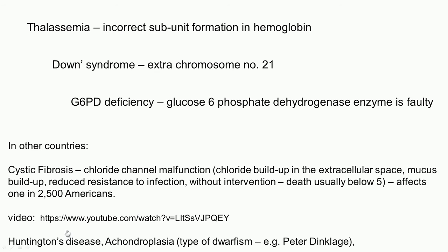Huntington's disease, which manifests above age 45, is also a genetic disorder. Achondroplasia is a kind of dwarfism — you might recall Peter Dinklage as Tyrion Lannister in Game of Thrones. That person has achondroplasia, which is an inherited disorder — a special type of inherited disorder, as we will see later.